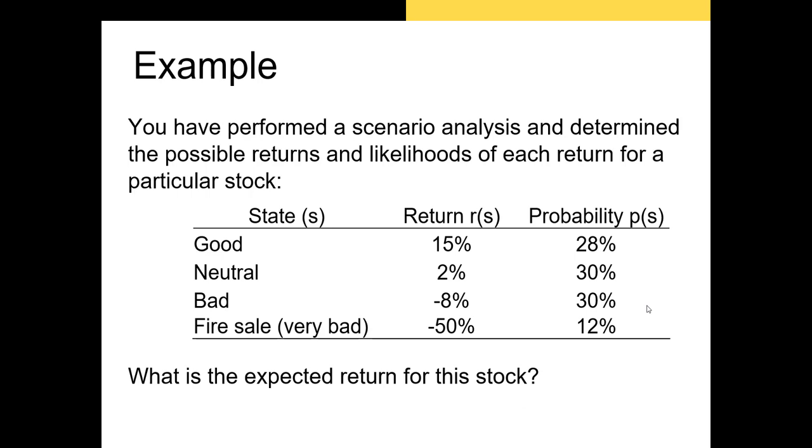You've performed scenario analysis and you've determined the possible returns and likelihoods of each return for a particular stock. We have really four states here: a good state, a neutral state, a bad state, and a fire sale state where everybody's trying to sell. We have returns that correspond with each state and we have the probability associated with each state of the economy occurring in the next year. So what is the expected return for this stock? I'm gonna move over to Excel and work that there.